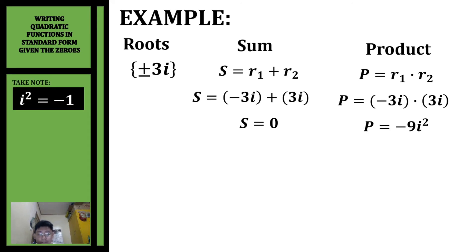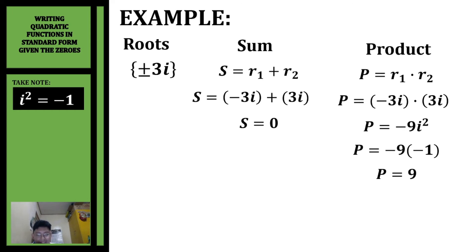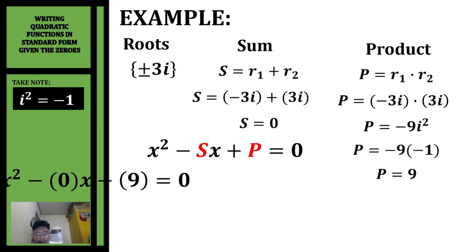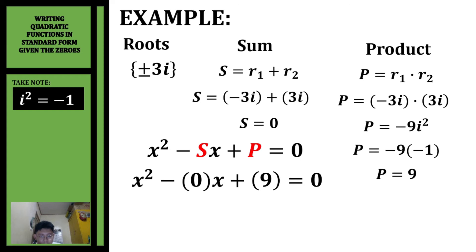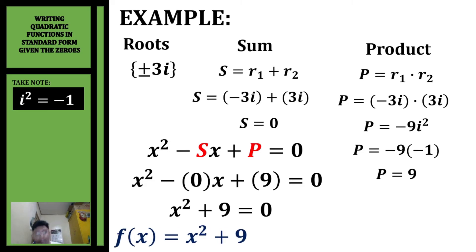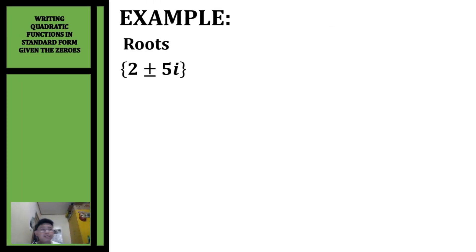Take note: i equals the square root of negative 1, so i squared equals negative 1. Therefore negative 9 times negative 1 gives a product of 9. Substituting into the formula: x squared minus 0x plus 9 equals zero. Simplifying: x squared plus 9 equals zero. Converting to a function: f(x) = x² + 9.